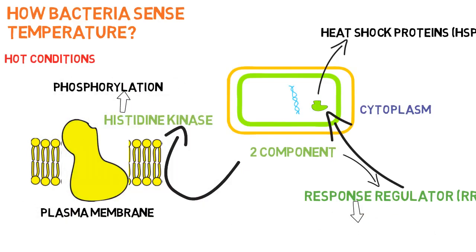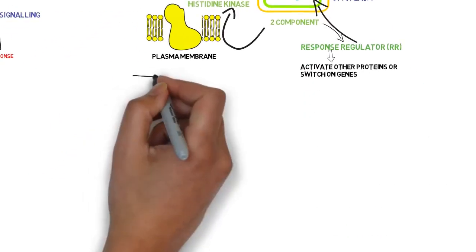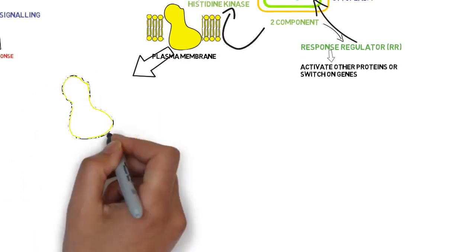response regulator protein is responsible for the stimulation of other proteins or genes to synthesize the heat shock proteins after its phosphorylation.